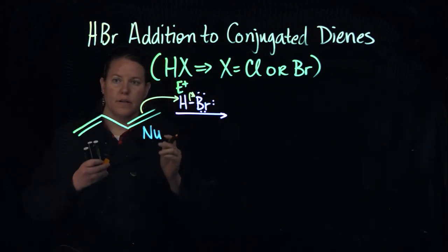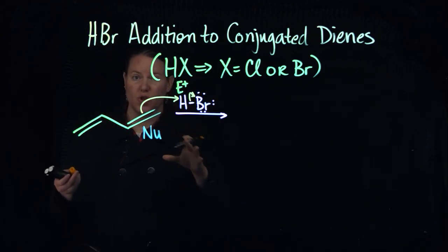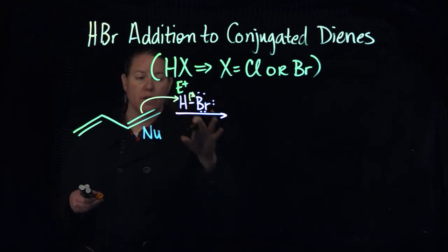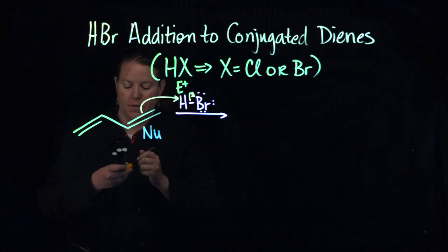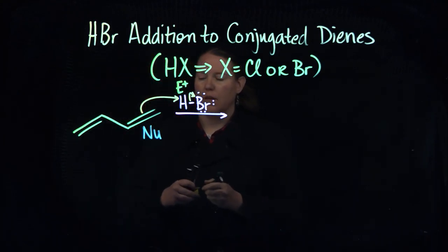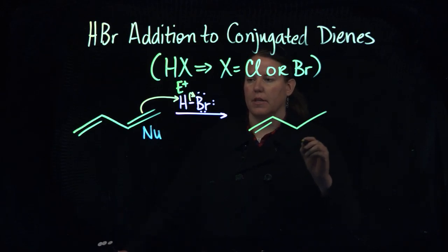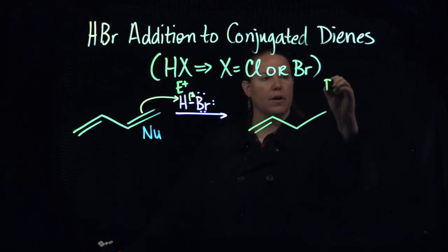Because H can't make two bonds around it, the bond that was between the H and the Br goes on to the Br. And I get a cool product that looks like this, right? So I have Br hanging out at the minus.